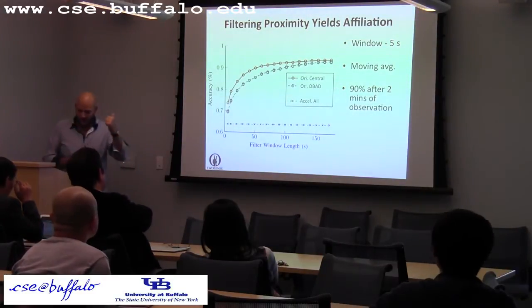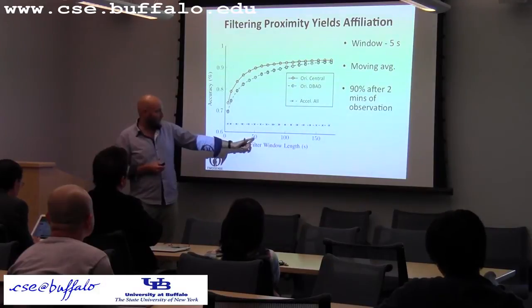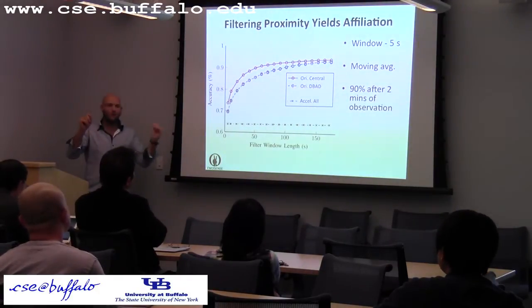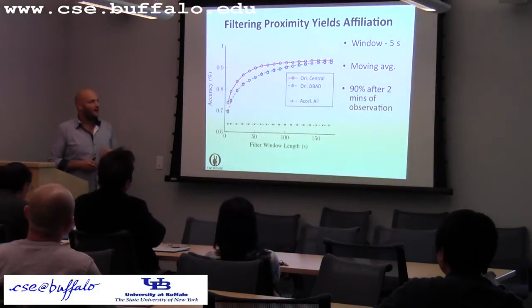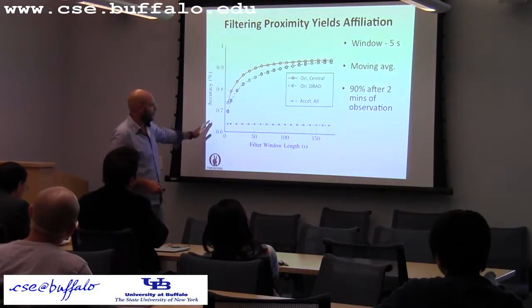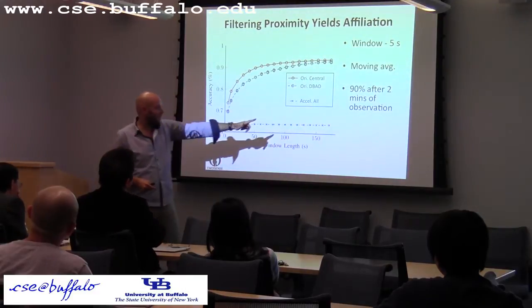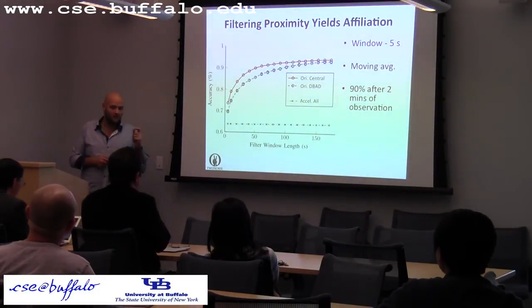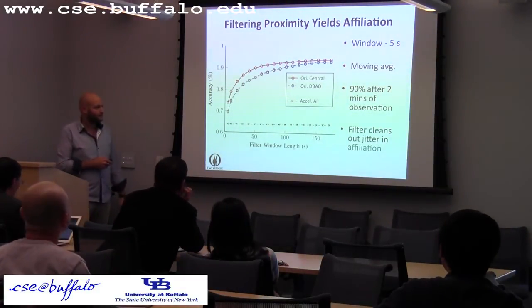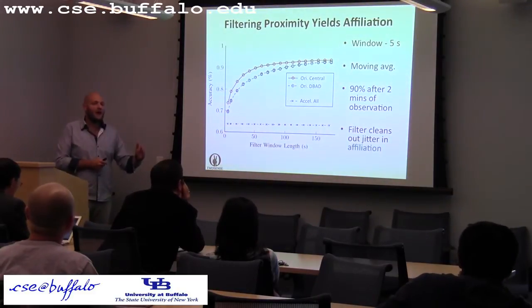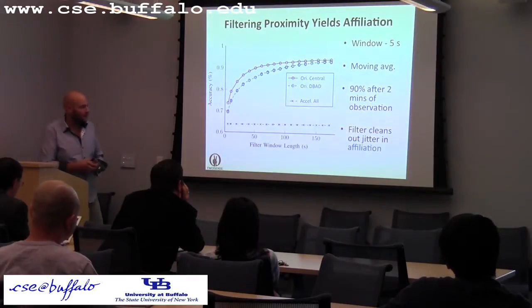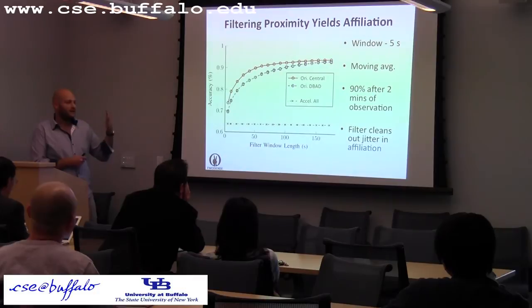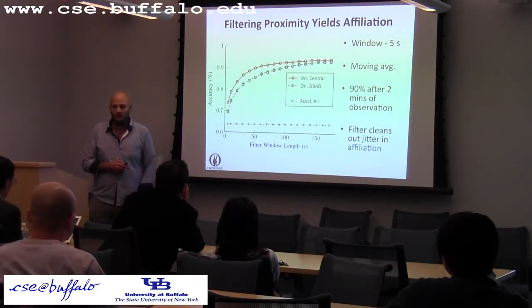What you can see is that the longer we observe the output from the algorithm, the better we get — 90% recognition after 120 seconds of observing five-second iterations of social proximity output from DBAD. This tells us the second assumption was correct: the reason for the initially bad recognition rate is jitter in the signal, going back and forth between affiliated and non-affiliated, but the majority of the time giving the correct answer. We just needed to smooth the output to get good results.